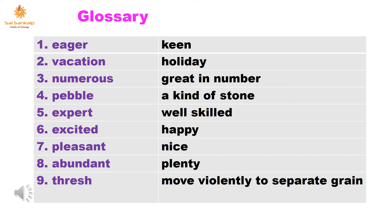Second: vacation — meaning holiday. Third: numerous — meaning great in number. Fourth: pebble — a kind of stone. The colourful stones you see in a fish tank are called pebbles.